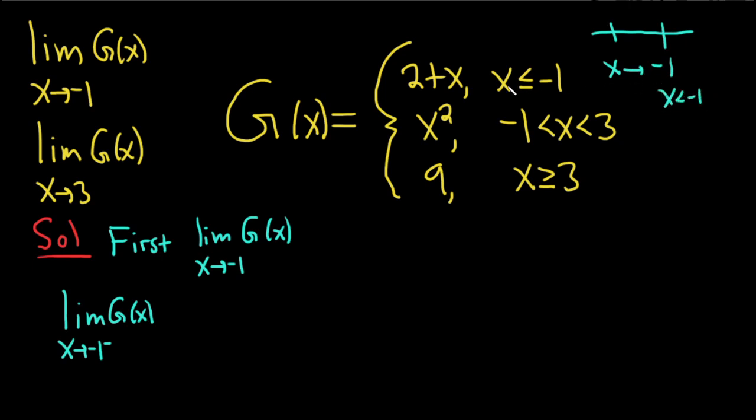That means you use the top piece because the condition for the top piece tells us that g of x is equal to 2 plus x whenever x is less than or equal to negative 1. So less than negative 1 satisfies that condition. So what we do is we come back down here, we write the limit sign again, you write the x approaching negative 1 from the left, and now you just replace your g of x with 2 plus x.